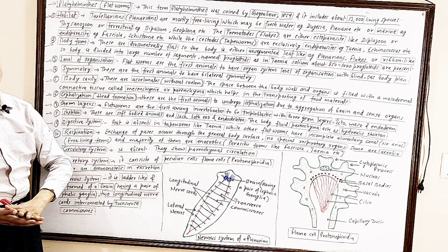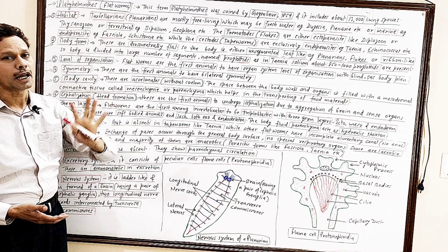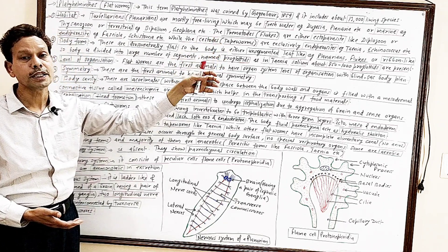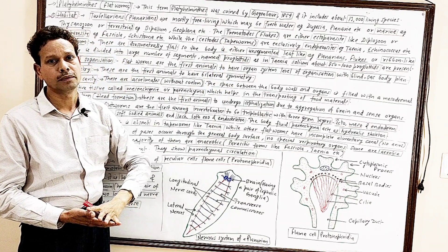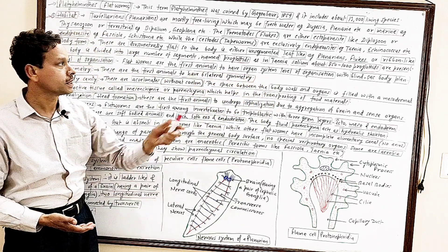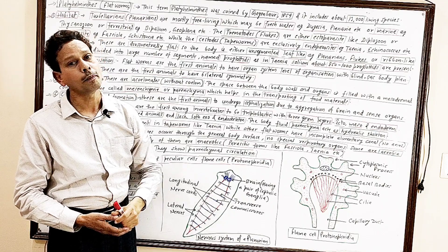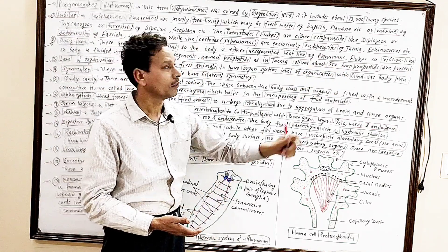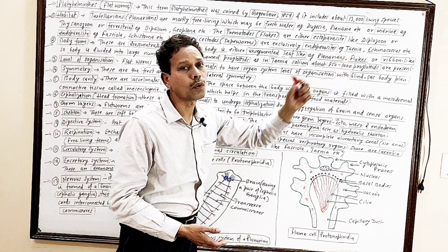The third group of Phylum Platyhelminthes is Cestoda. Cestodes are commonly named tapeworms, and their body is segmented. These are exclusively endoparasites. Common examples are Taenia solium and Echinococcus.